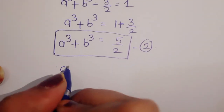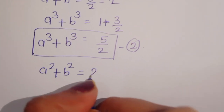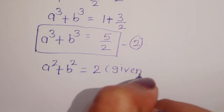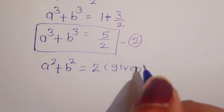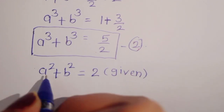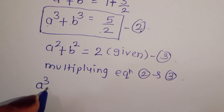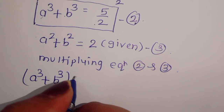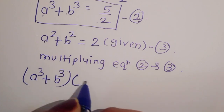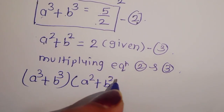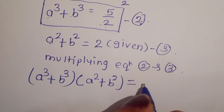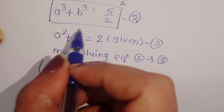Now a squared plus b squared is equal to 2, which is given — this is equation 3. Now we multiply equation 2 and equation 3: (a cube plus b cube) times (a squared plus b squared) equals 5 upon 2 times 2.